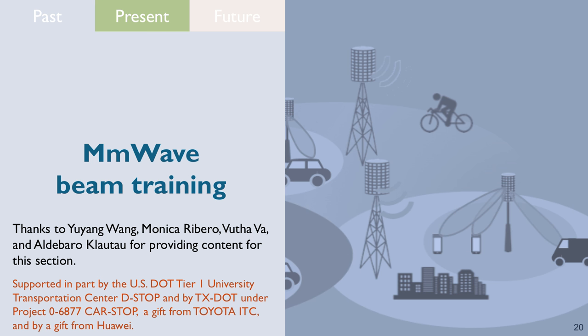Now I'll tell you about what we're doing in millimeter-wave beam training. Millimeter-wave communication systems have been an exciting topic for at least five years. The main feature of millimeter-wave is high bandwidth, thus high data-rate communication. The way millimeter-wave is being implemented in early commercial systems — including wireless HD and 802.11ad — uses the following concept.